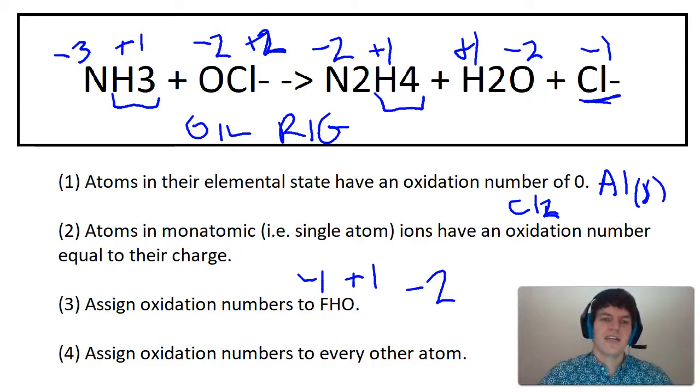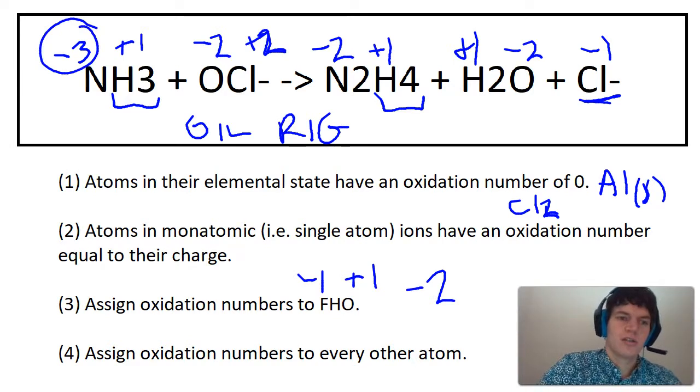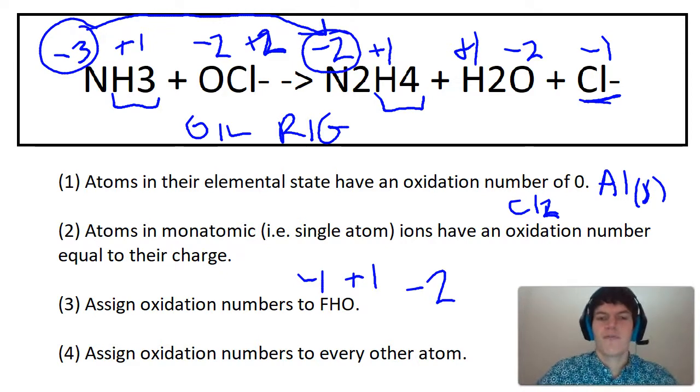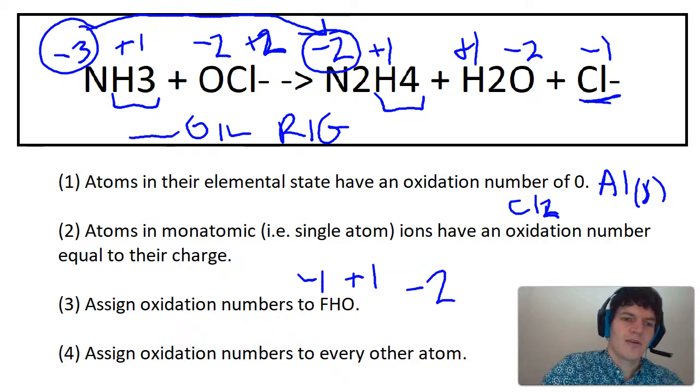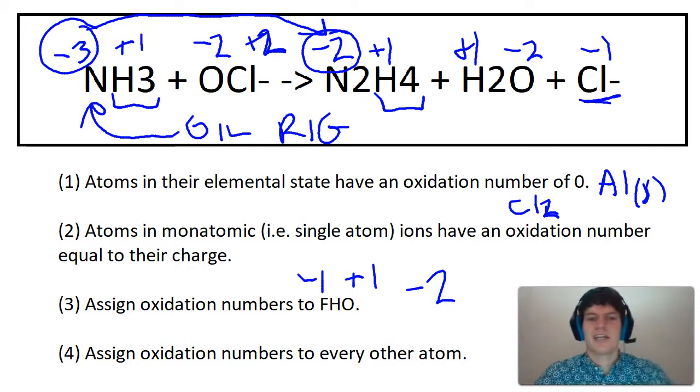So let's take a look at what happens to each of these elements. It looks like nitrogen is losing an electron. It's going from a minus three charge to a minus two charge. Therefore, it's losing an electron. It's becoming less negative. Therefore, I think that nitrogen is being oxidized. So I'm going to say nitrogen is being oxidized.